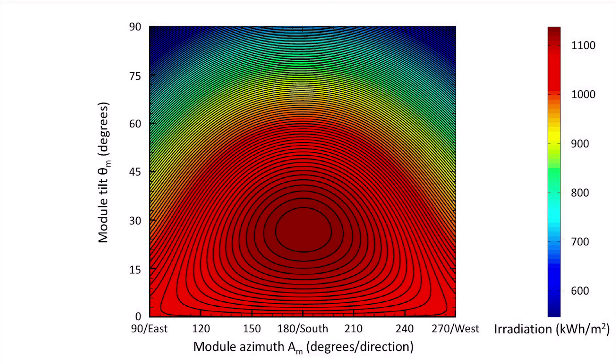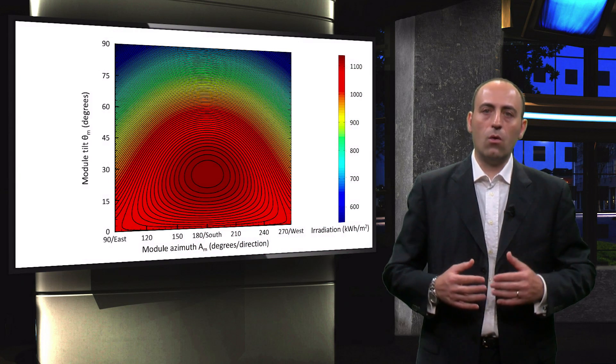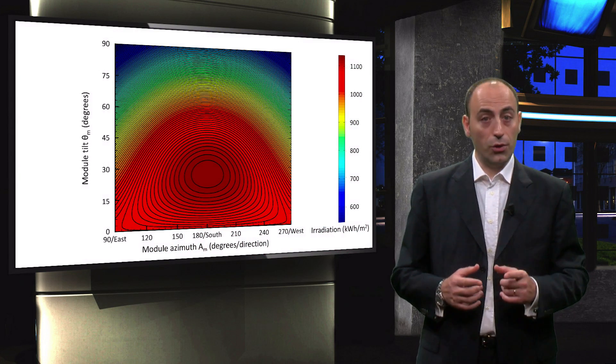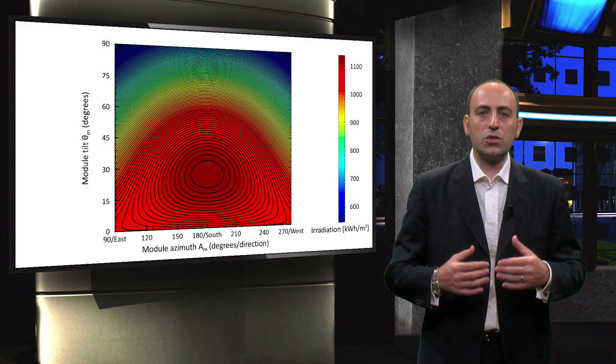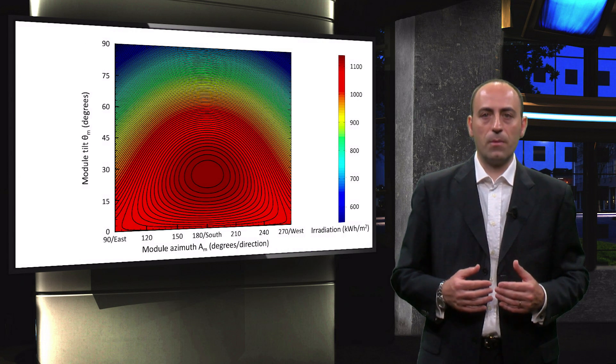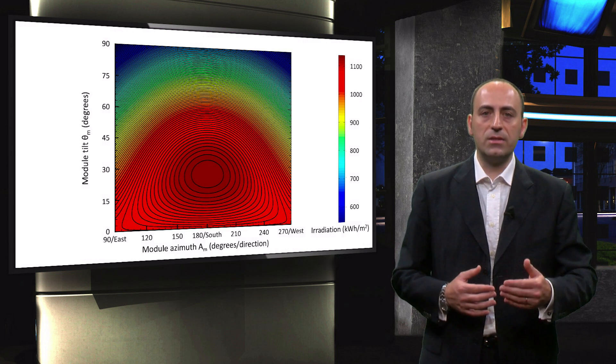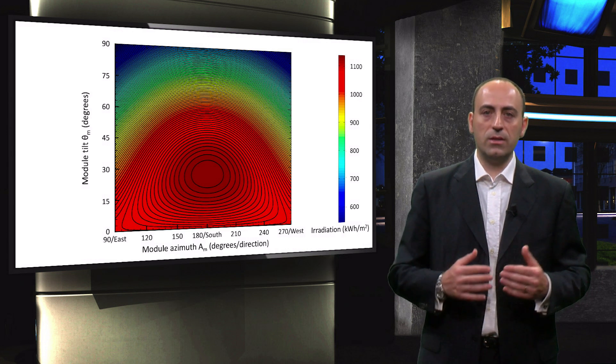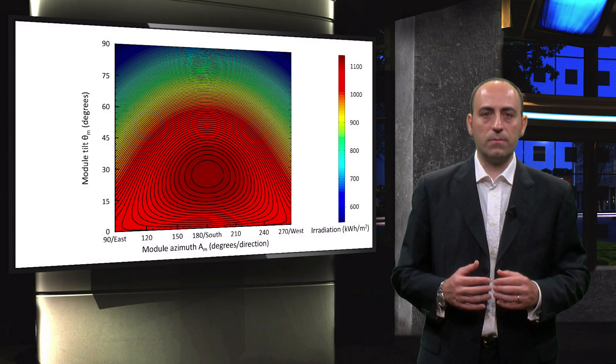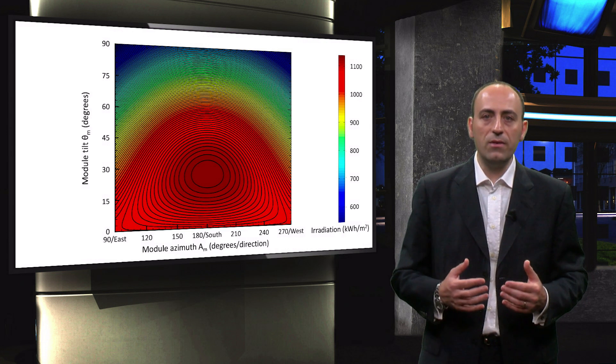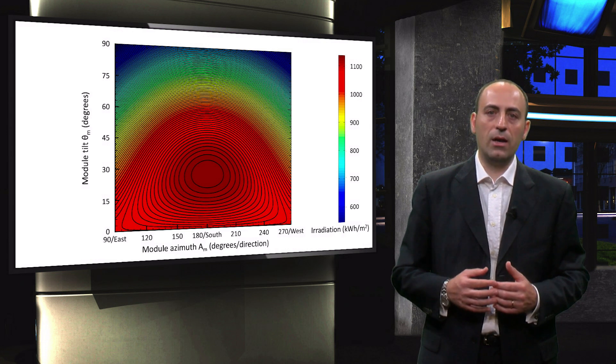Note that in some installations, the array tilt angle or azimuth angle is decided for you. This can be the case for sloped roof mounted systems. Moreover, if your energy demand is highest in the winter, then you can optimize the tilt and azimuth for the winter months. This will, however, inevitably lead to a sub-optimal annual energy yield.